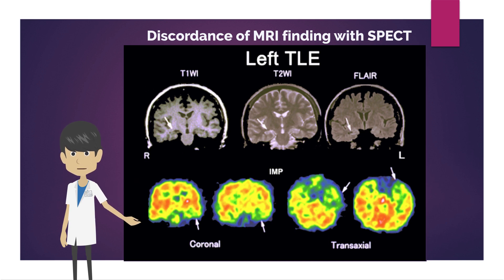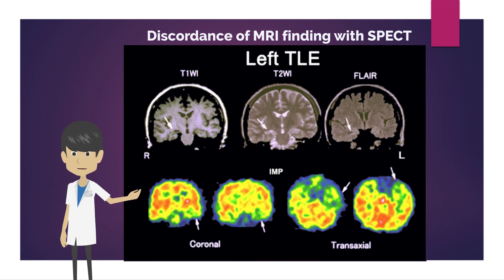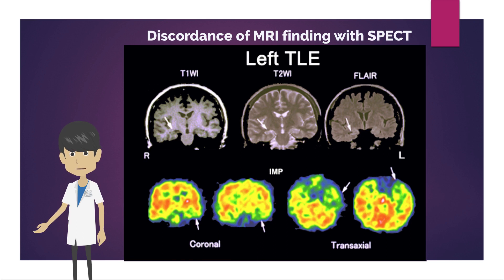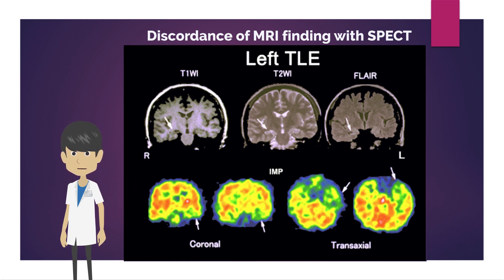However, in this case, the hippocampal sclerosis was seen on the right side, while the decreased perfusion was seen in the left temporal lobe. In this case, the right hippocampus has already lost its epileptogenicity, indicating that the focus has shifted to the left hippocampus. Thus, nuclear brain imaging is useful in confirming the laterality of the temporal lobe epileptic focus.